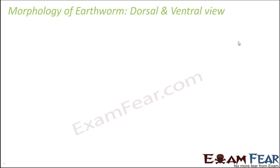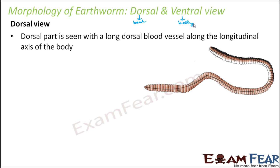When we say dorsal, we mean towards the back; when we say ventral, we mean towards the belly. When an earthworm is moving on the ground, the dorsal side is the surface facing the sky — the upper surface. The ventral side is the surface towards the ground. In a dorsal view, the dorsal part is identified by a long dorsal blood vessel running along the longitudinal axis of the body — this is a very prominent feature.